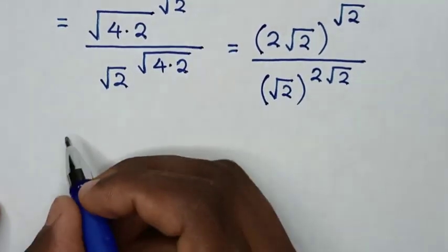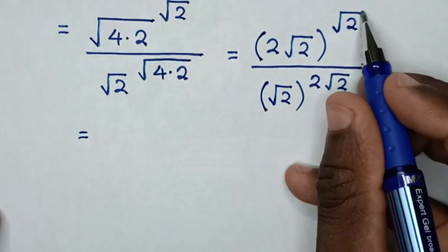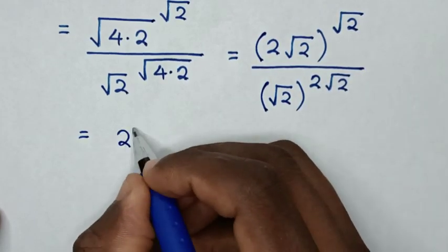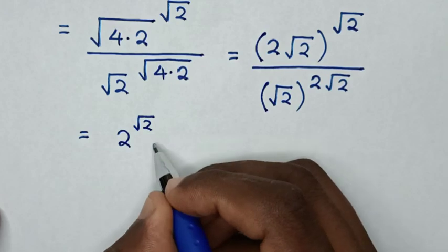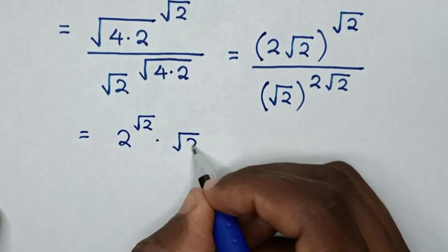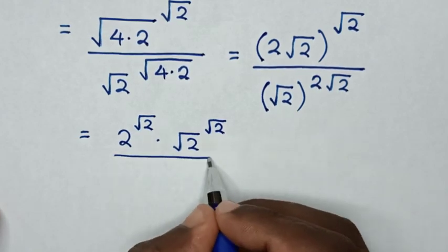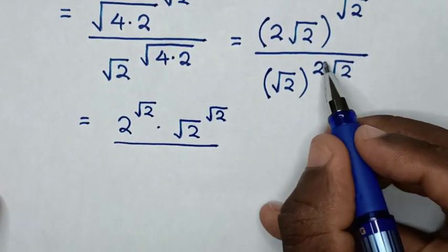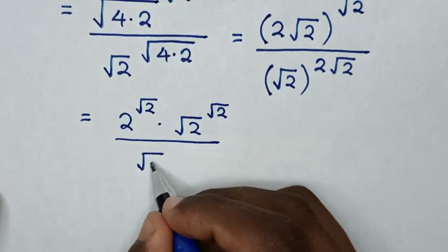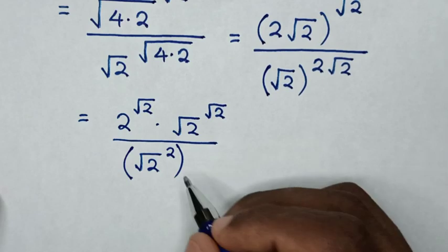In the next step, we will take this power of square root of 2 inside the bracket, so it will be 2 power of square root of 2, then times square root of 2 power of square root of 2. We will take this power of 2 inside the bracket, so it will be square root of 2 power of 2, then bracket power of square root of 2.